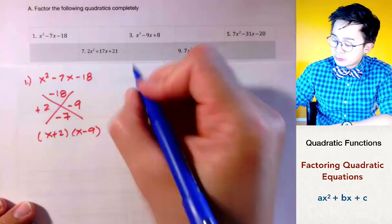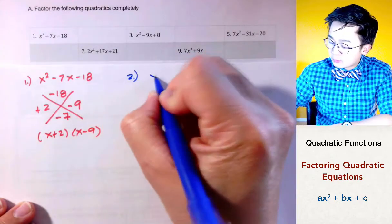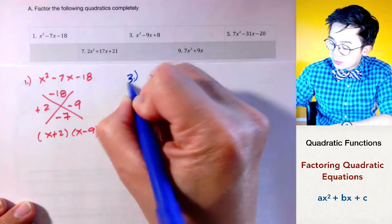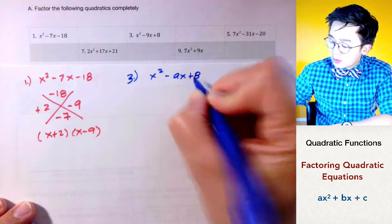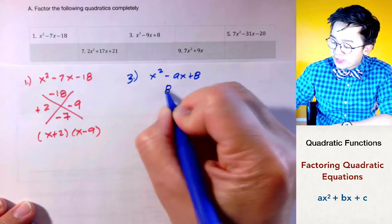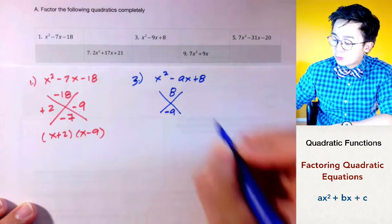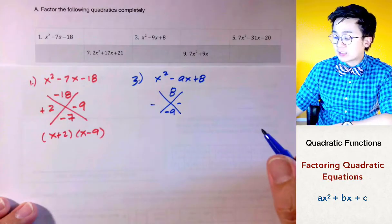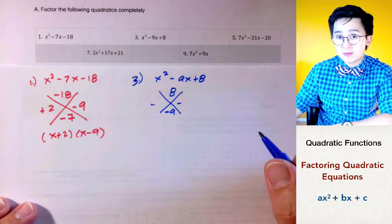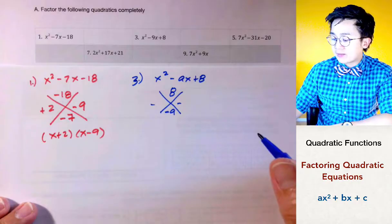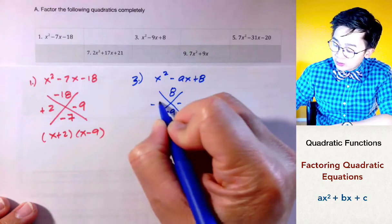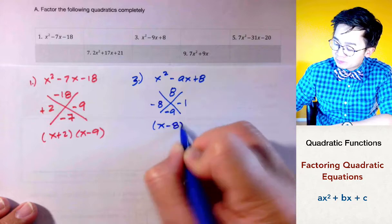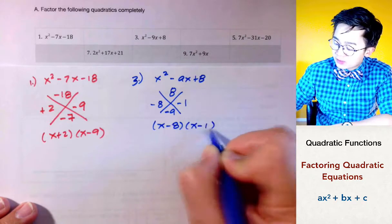For problem number 3, the factors of 8 — the last term — that give you negative 9 when you add them up: both factors should be negative, because two negatives multiplied give a positive, and added give a negative. The factors we're looking for are 8 and 1, giving us (x − 8) and (x − 1) as the factored form.